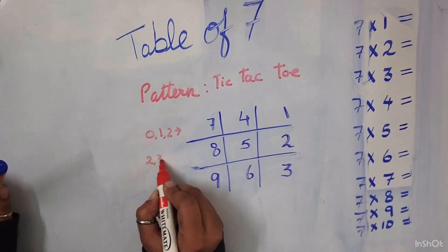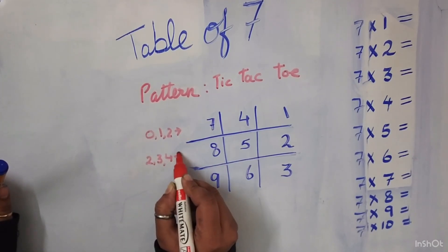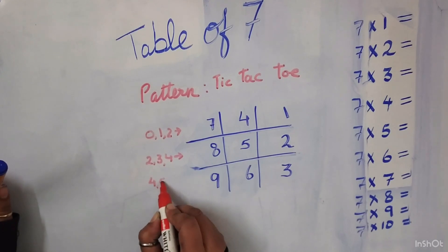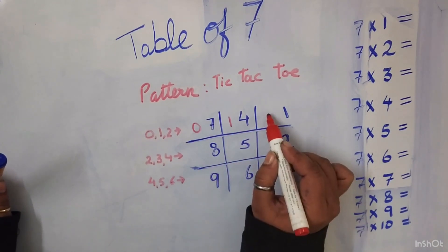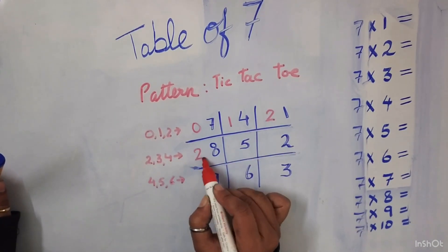For the first row, 2, 3 and 4. For the second row, 4, 5 and 6. For the third row. Now let us write the magic numbers in the tic-tac-toe.